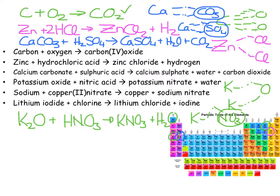Counting: 2 potassiums on the left but only 1 on the right, so put a 2 in front of KNO₃. Now 2 potassiums each side, 7 oxygens each side (1+6 on left, 6+1 on right), 2 hydrogens each side, 2 nitrogens each side. That is now balanced.